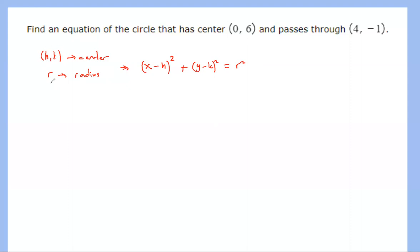We know the center, which is given as zero comma six, which is good. I can say x minus zero, because the x coordinate will be h and k will be your y coordinate. So that will be x minus zero squared, and y minus six to the second power. But the problem is, we do not know the radius.